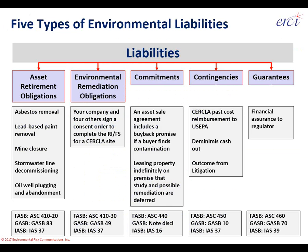The first, and financially the largest, type of environmental liabilities are asset retirement obligations. These are the demolition, decommissioning, and decontamination expenses at the tail end of the useful life of a building, facility, or operating plant. This encompasses everything from asbestos and lead-based paint removal to mine closures, stormwater and sewer line decommissioning, and oil well plugging and abandonment.